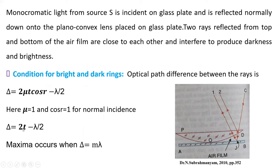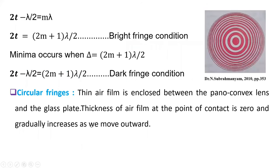So this Δ = 2t - λ/2. And see, maximum occurs when this Δ = mλ. So putting this delta value mλ here, we get 2t - λ/2 = mλ. So 2t = (2m + 1)λ/2. Bright fringe condition. This is the condition for bright fringe.